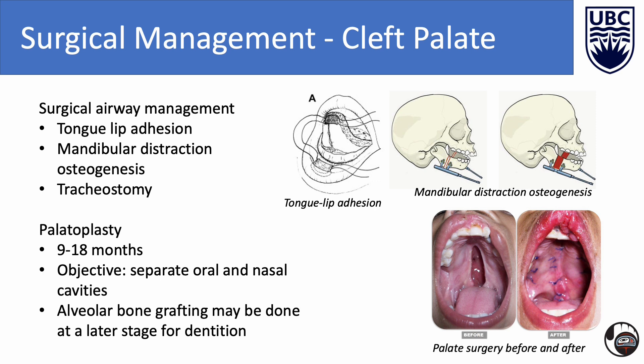Now let's move on to the surgical management of the cleft palate patient. If the patient has severe airway compromise, that must be firstly addressed. Options include tongue lip adhesion, where the tongue is advanced forward and sutured to the lower lip to prevent it from falling back and causing airway obstruction; mandibular distraction osteogenesis, which involves cutting the mandible and attaching distraction devices that gradually pull the jaw forward over time; and finally, a tracheostomy. To actually treat the cleft palate, a palatoplasty is used. It establishes normal palatal anatomy, separating the oral and nasal cavities. Surgery is usually performed between 9 to 18 months. The procedure helps with speech development, minimizes ear affection, and allows for facial growth.